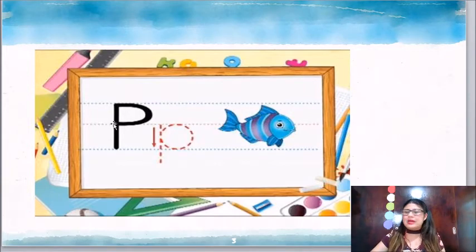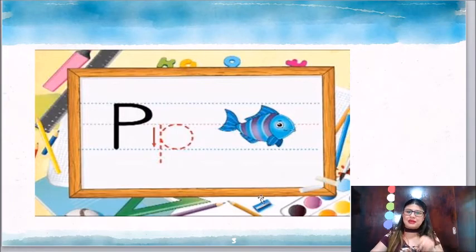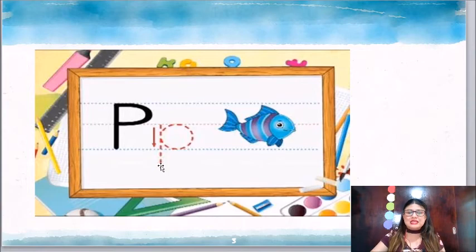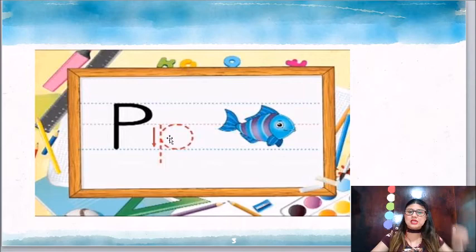Así se escribe nuestra P mayúscula. La P minúscula es muy similar. Vamos a empezar de arriba hacia abajo, marcando un palito muy derechito. Ya que hayamos trazado nuestro palito, le vamos a hacer su cabecita. Su cabecita es un círculo.